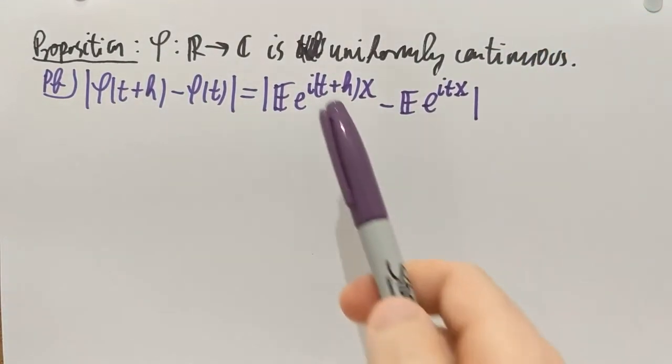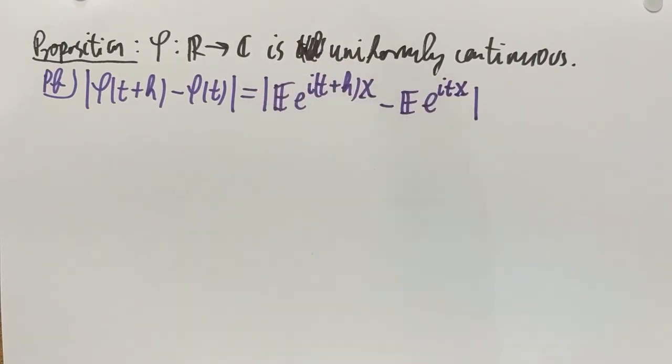So, the absolute value is taken on complex values. So these are complex numbers here. These expectations are complex. Nevertheless, we still have Jensen's inequality. If you go back to the proof of Jensen, then it works for functions going into multiple dimensions. So, we still have Jensen's inequality.